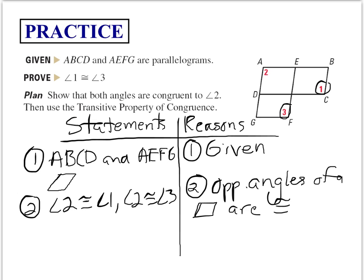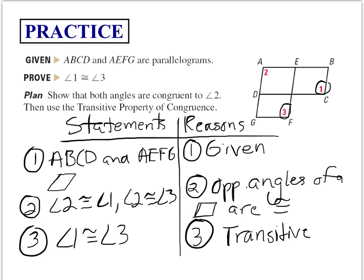You just have to write that phrase out for that reason. So if 1 is congruent to 2 and 2 is congruent to 3, then we can conclude that angle 1 is congruent to angle 3 because of the transitive property of congruence. Let's start abbreviating that as POC, property of congruence.